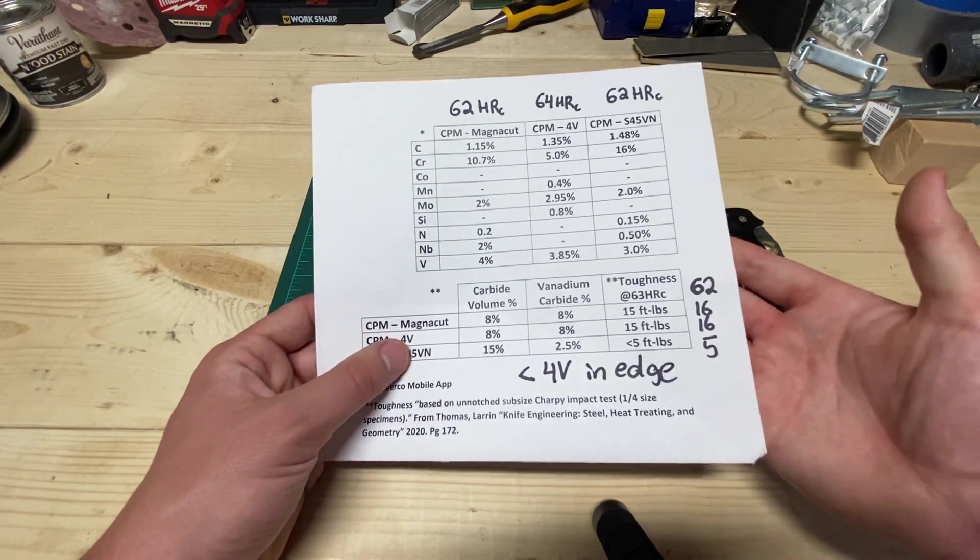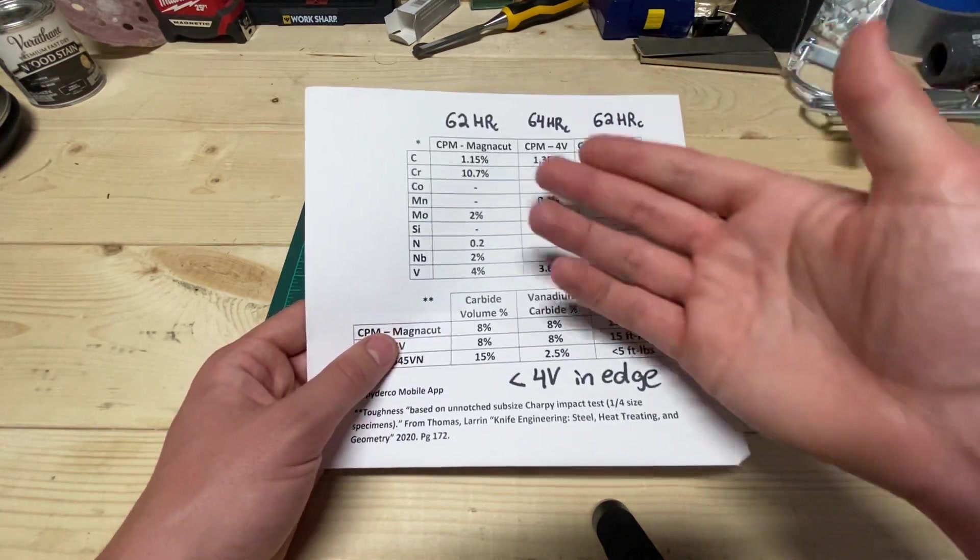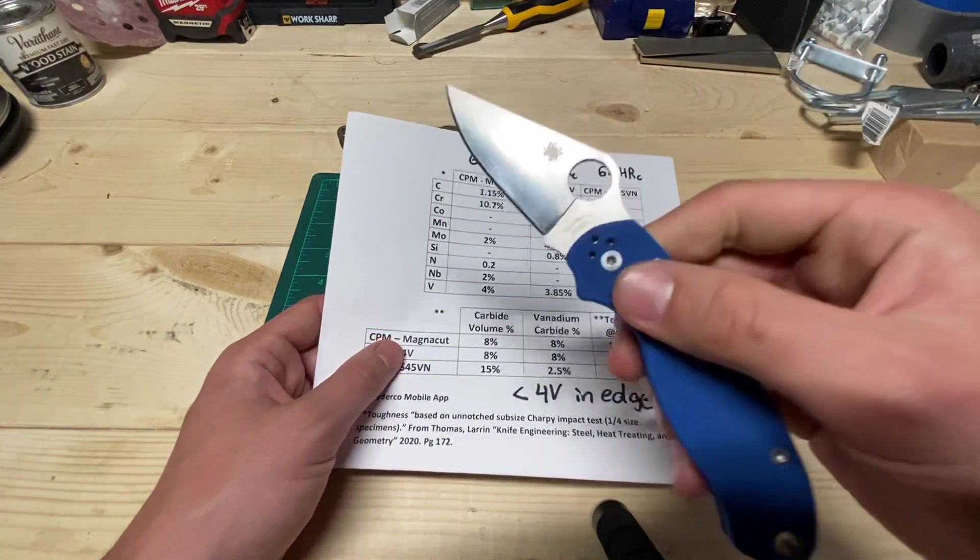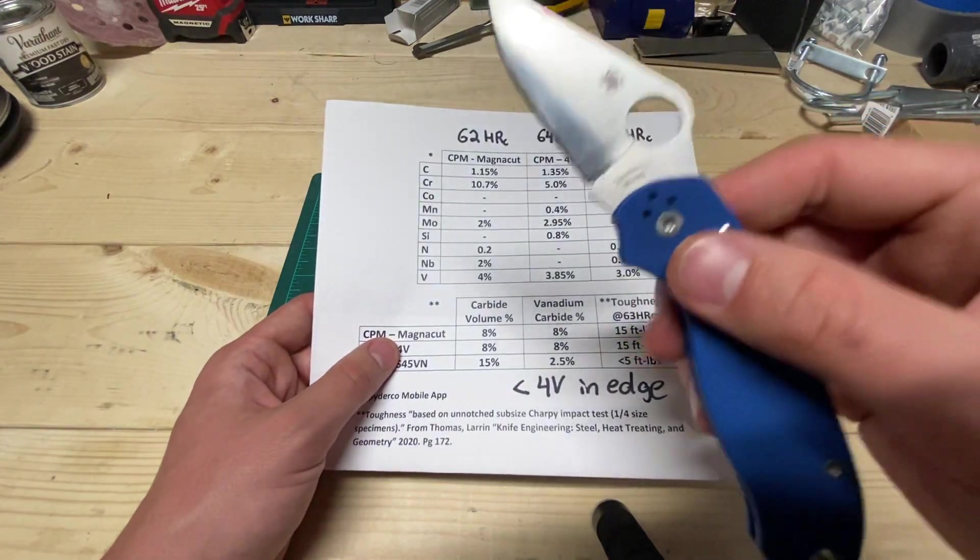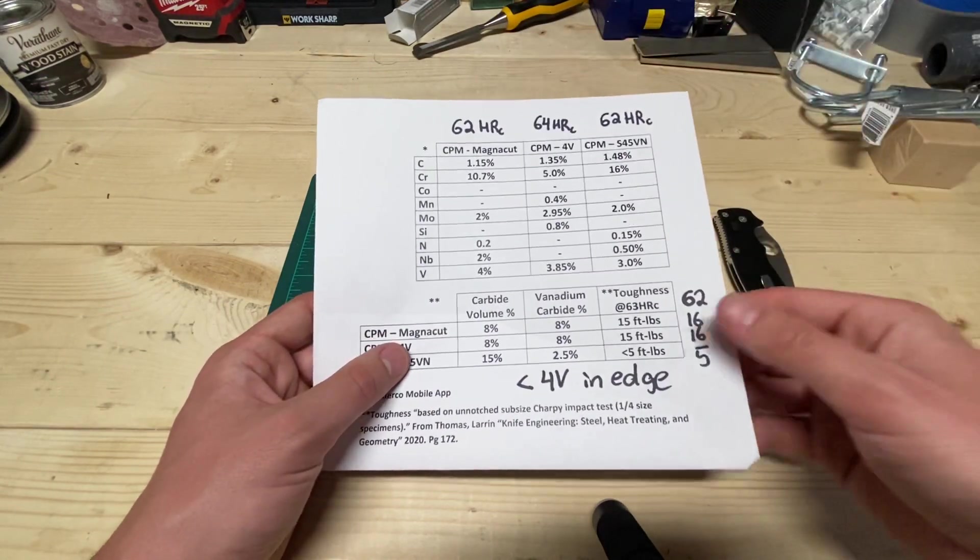And the net result of that is because you've got all of this chromium freed up, is this steel is equally, if not more, stainless than M390, which is a very stainless steel. So that's very impressive.